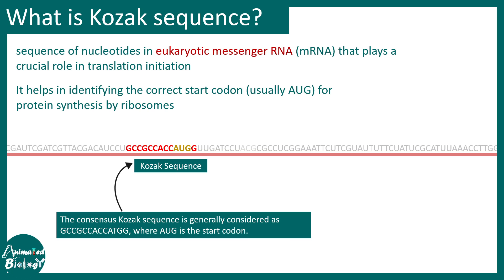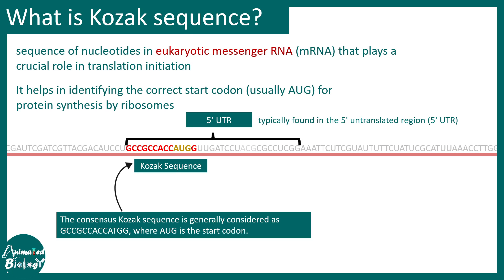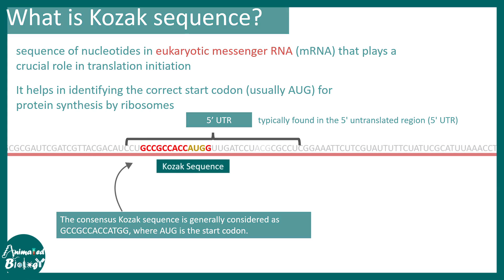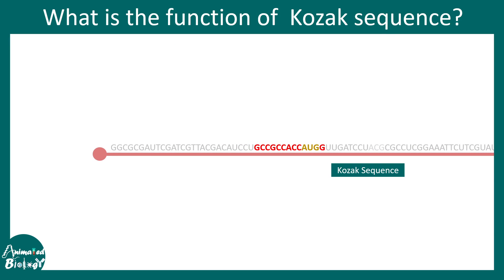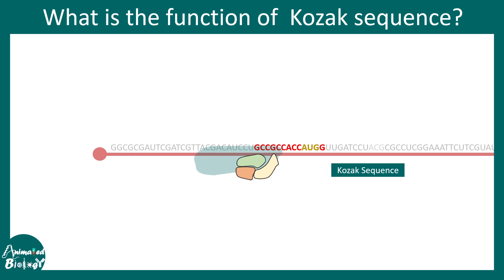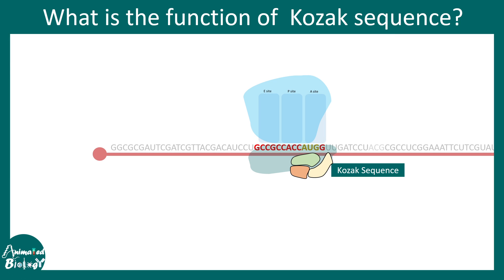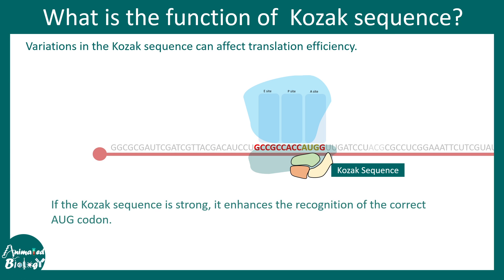The consensus sequence for the Kozak sequence has the start codon inside it, and it is also included in the 5' UTR of the eukaryotic mRNA. This helps the small ribosomal subunit to be recruited at the cap, and the ribosomal subunit can scan the 5' UTR to locate the first start codon. Thereby, ribosomal assembly happens and translation initiation begins in eukaryotes.